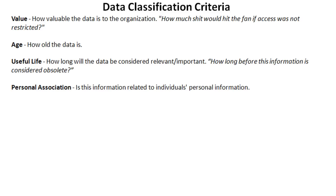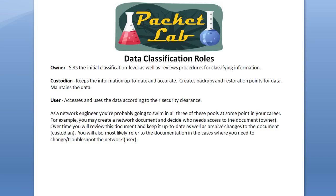The last criterion is personal association — information that could be related to individuals' private information. I work in healthcare, so this is a big one for us. We have to scrub our data to make sure we don't make available information that can be traced back to an individual's medical record. We are strictly regulated to not let that stuff get out. After the data has been classified and set up in your structure, there are going to be different roles that different people have when interacting with this data.